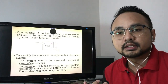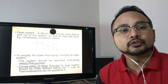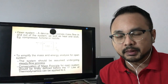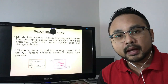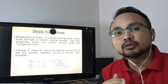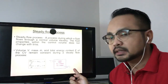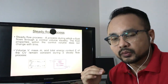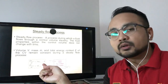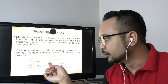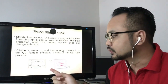For steady flow process, the conservation of mass principle must be defined before energy balance. In a steady flow process, since it is steady, there is no change in mass — the amount of mass going in equals the amount going out, so delta M equals zero. Similarly, the change in total energy is also zero for a steady flow process.